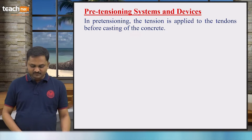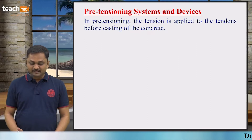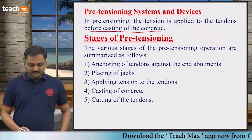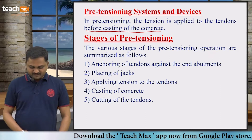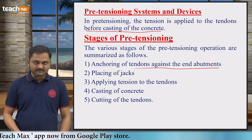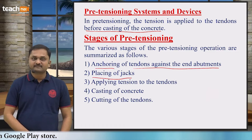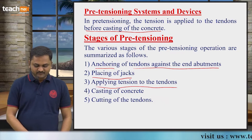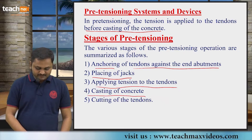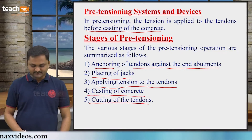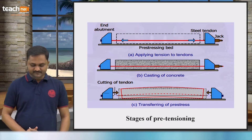In pre-tensioning, the tension is applied to the tendon before casting of concrete. The stages of pre-tensioning are: first, anchoring of tendons against the end abutment; second, placing of jacks; third, applying tension to the tendons; fourth, casting of concrete; and fifth, cutting the tendons once concrete becomes hardened.